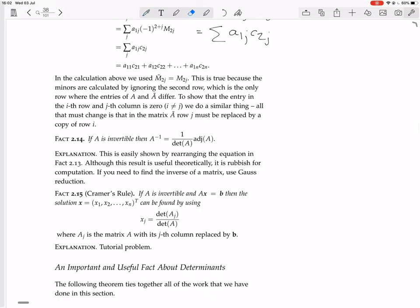So that proves that the inverse matrix is equal to 1 over the determinant times the adjoint. Now, this is easily shown by rearranging the equation in Fact 2.13. Although this result is useful theoretically, it is rubbish for computation, because it's so hard to calculate the adjoint.